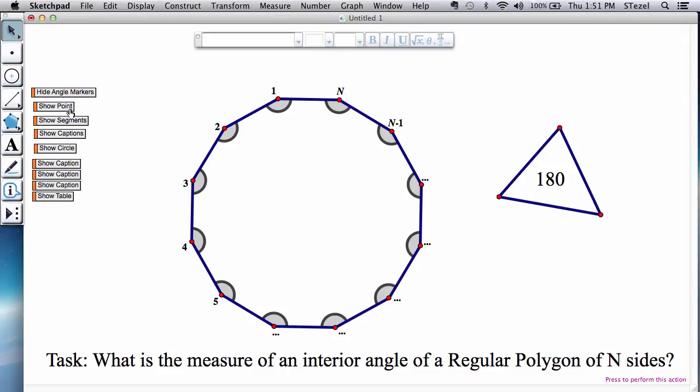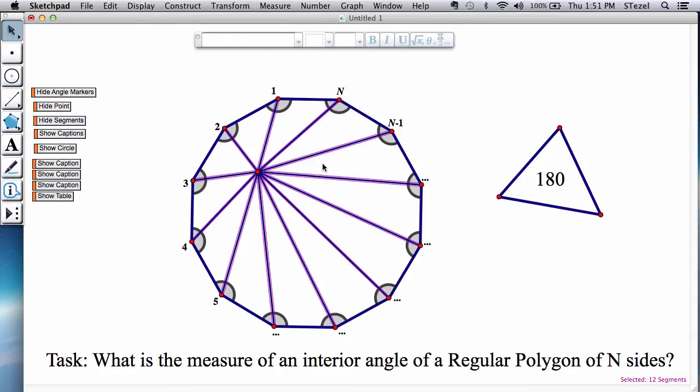So the way we do that is we pick any point in the interior of this polygon, and that's the beauty of this, it could be any point. And then you join this point to each of the vertices with segments in this manner.